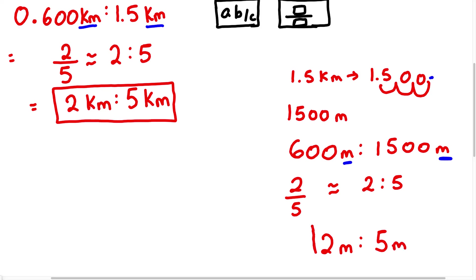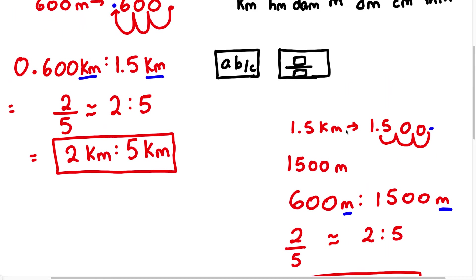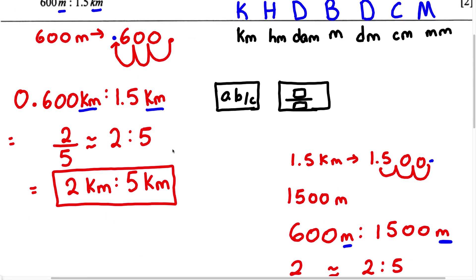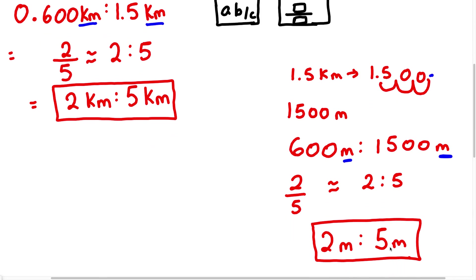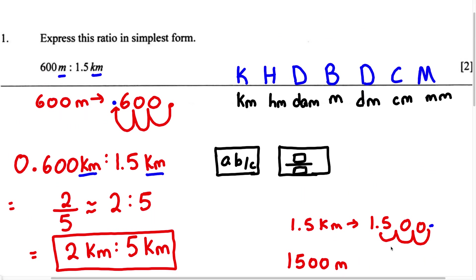So this is also the answer for this problem. In the answer space provided, you could have written either 2 kilometers to 5 kilometers or 2 meters to 5 meters and still gotten the answer correct. You don't have to do both ways — either way would be accepted.